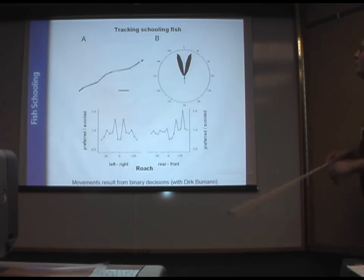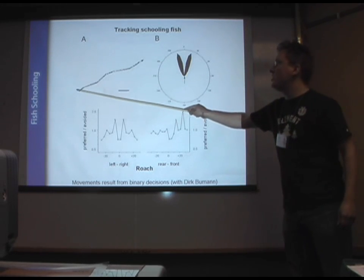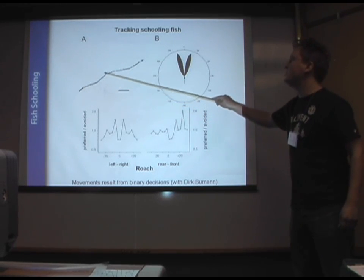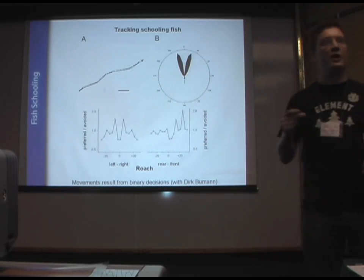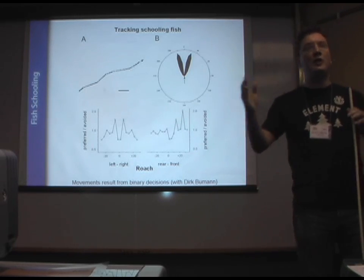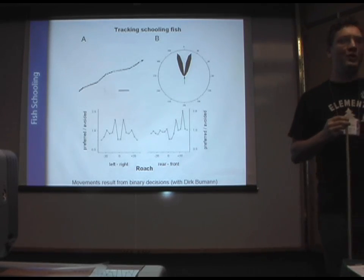If we look at the roach, for example, these individuals, every time they make a movement, they burst and they glide, and they burst and glide, burst and glide, burst and glide. Every time they make a move, it's either to the left or the right by 15 degrees. They're making a binary choice. They're not doing the average of their neighborhood. They're just doing a binary choice, left, right, left or right, every time they make a move.